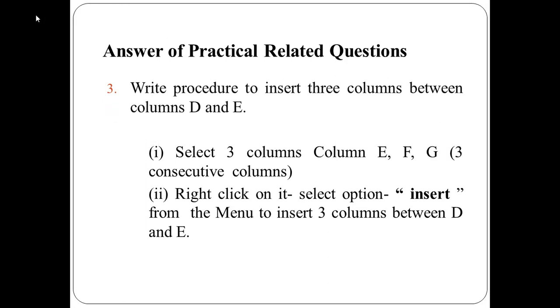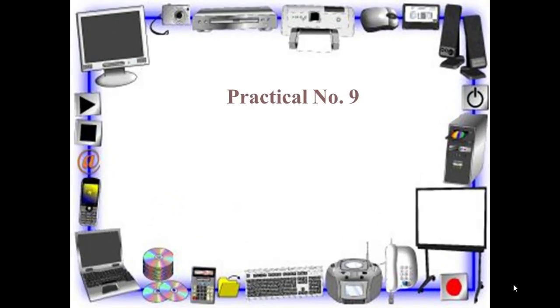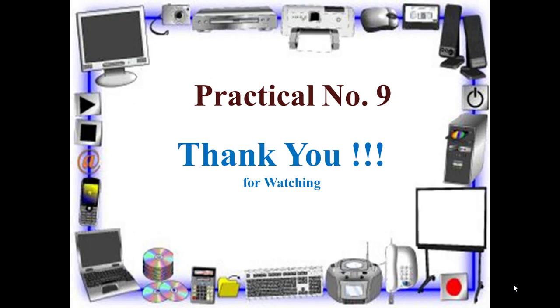The third question is write procedure to insert three columns between column D and E. So the answer of this question is select the three columns column number E, F, G that is three consecutive columns then right click on it select the option insert from the menu to insert three columns between D and E. So this is all about practical number 9. Thanks for watching.